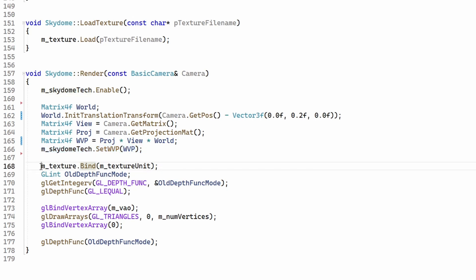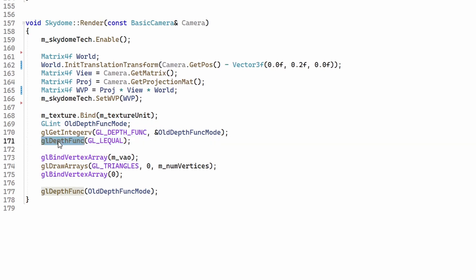The view and projection matrices are as usual so we can create the WVP matrix for the sky dome and put this into the vertex shader. Next we bind the texture which we will not use at the initial stage but we will need this later when we add texture coordinates. Next we change the depth function to less than or equal. This is a trick that we saw in the previous tutorial on the skybox so make sure you check that out. This is part of making sure that the sky dome comes after all the other objects in the scene. We can now bind the VAO and call the draw function.